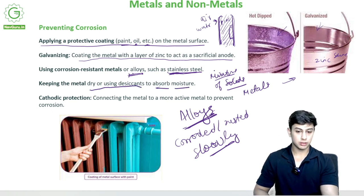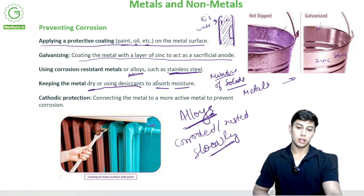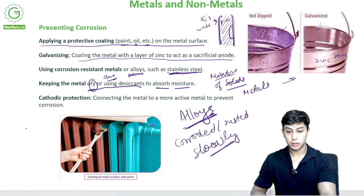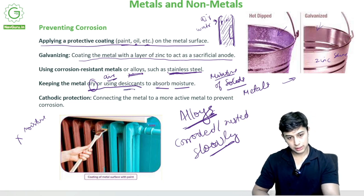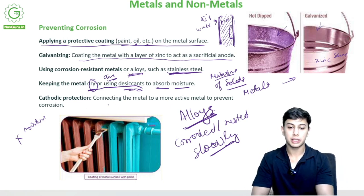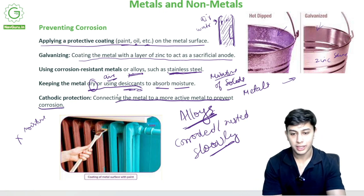Another way to prevent corrosion is keeping the metal dry or using a desiccant to absorb moisture. Corrosion requires air (O₂) and moisture (H₂O) to happen, so if you keep the metal dry — no moisture — it will stay corrosion-free. Cathodic protection means connecting the metal to a more active metal to prevent corrosion, which is also what happens in galvanizing.